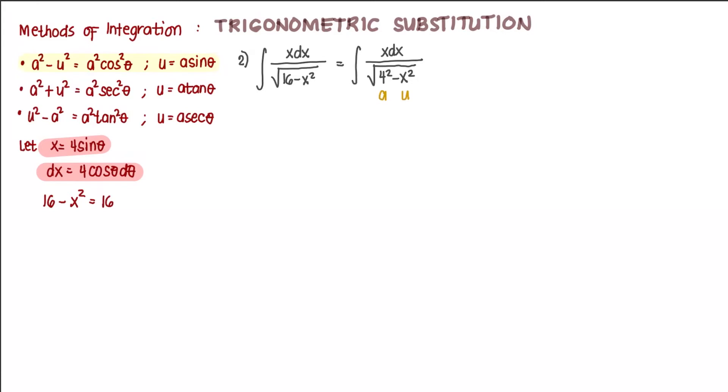So we can rewrite 16 minus x squared equals a squared. A squared is 16. So 16 cosine squared of theta. And we can replace that now in our integral.